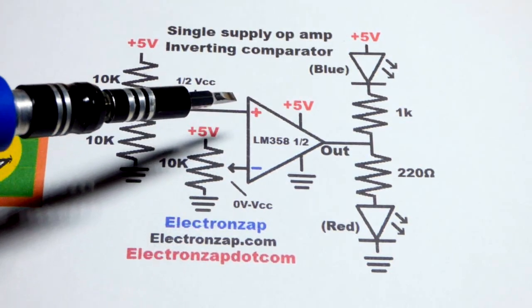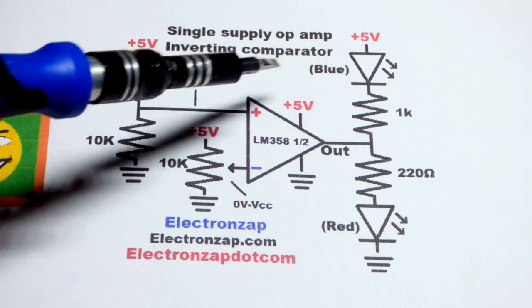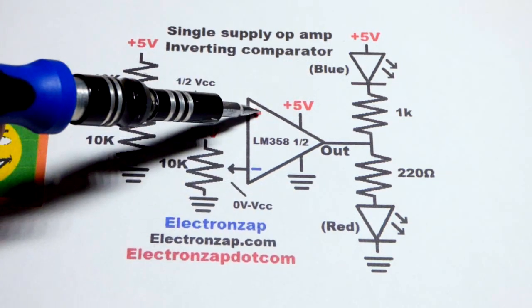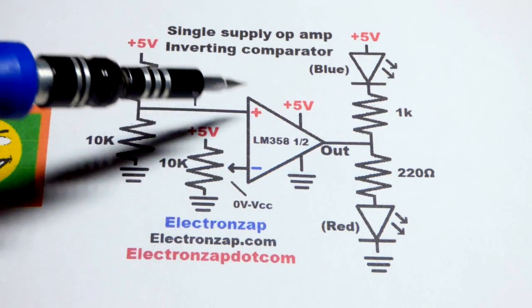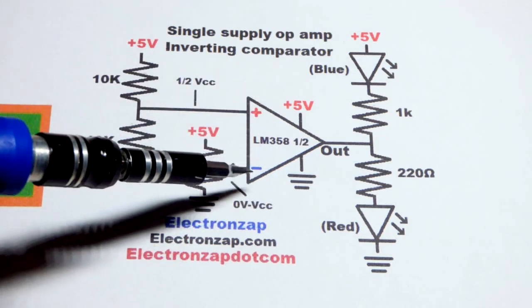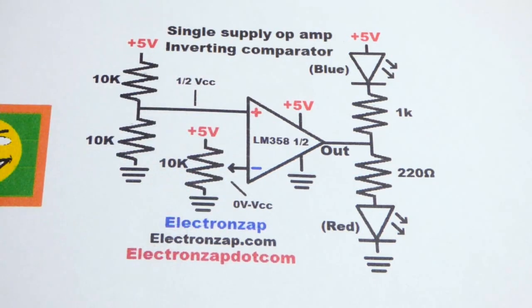Now, what we did last video, we did a comparator, non-inverting comparator. Plus was down there, minus was up there. And all I did was swap those two. That's all I had to do to change the circuit.